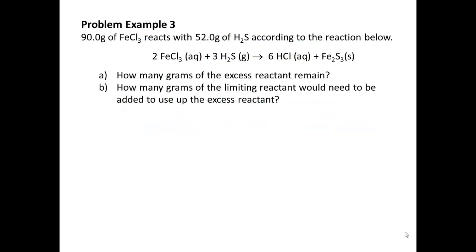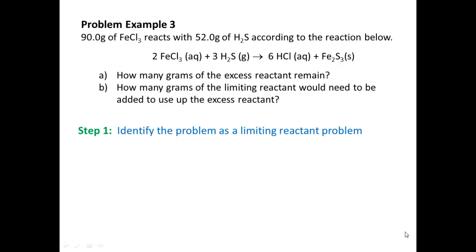Let's take a look at problem example three. In this problem, we have 90.0 grams of FeCl3 reacting with 52.0 grams of H2S according to our reaction. We're asked how many grams of the excess reactant remain, and how many grams of the limiting reactant would need to be added to use up the excess reactant. Like before, we need to start the problem the same way: step one, identify it as a limiting reactant problem because we have two amounts of reactants given. Step two, choose a product.